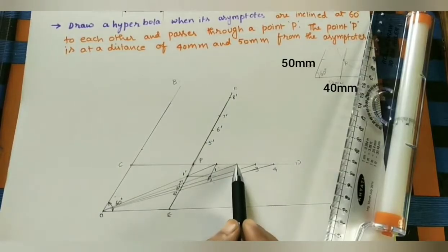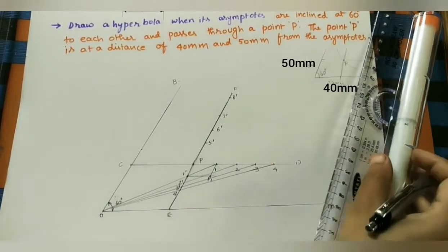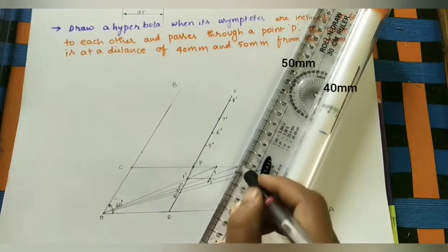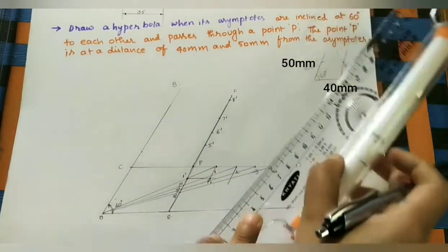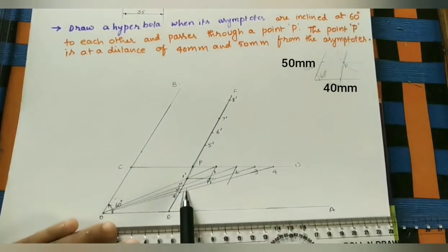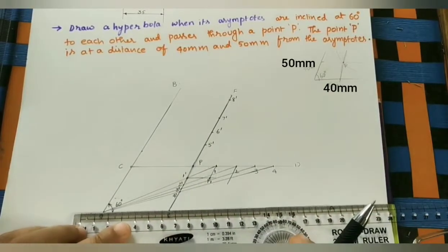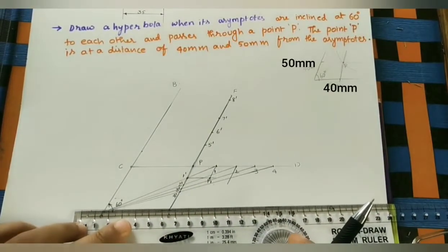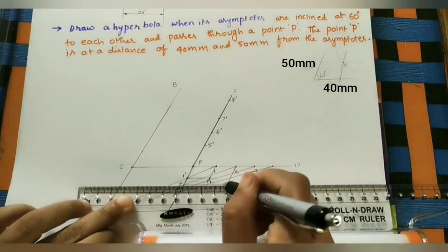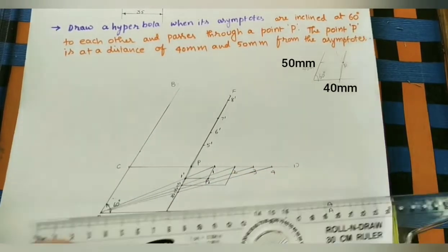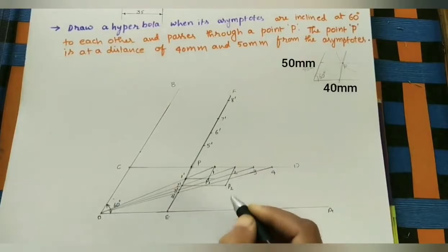Similarly, at point 2 draw a line parallel to this asymptote, and at 2' draw a horizontal line parallel to the other. Take the intersection point, which is P2.